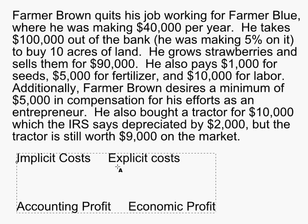An explicit cost is anything where Farmer Brown actually has to take money out of his pocket and hand it to another person. Just like an explicit film, it's right there in your face and you can see it — you can see the money changing hands. So explicit means you can see the money move from one place to another.